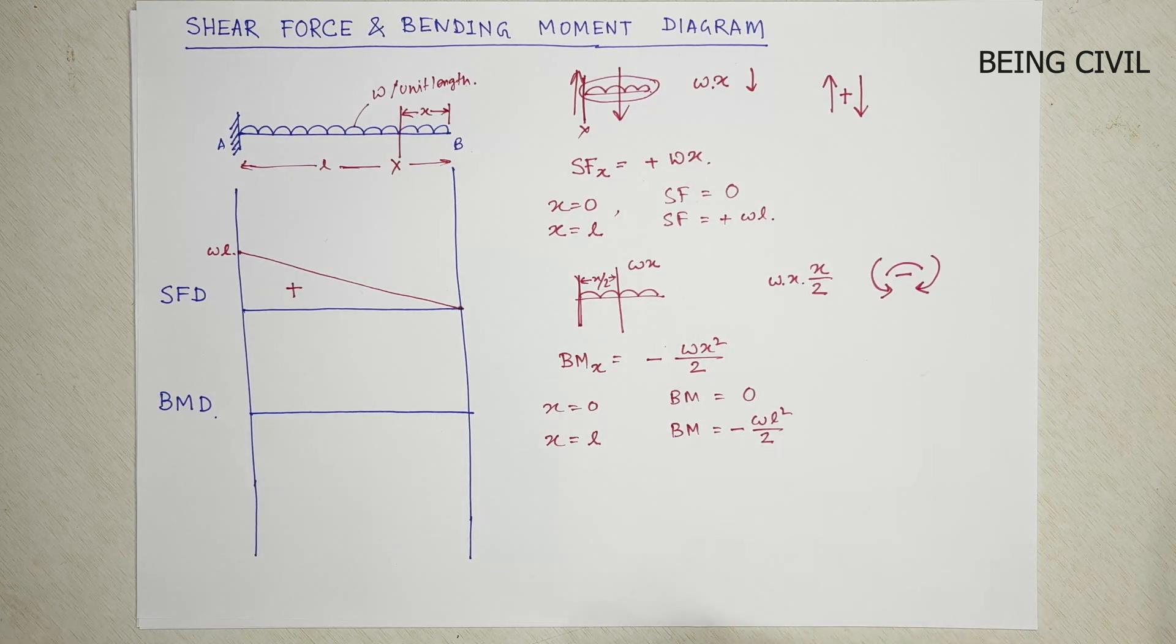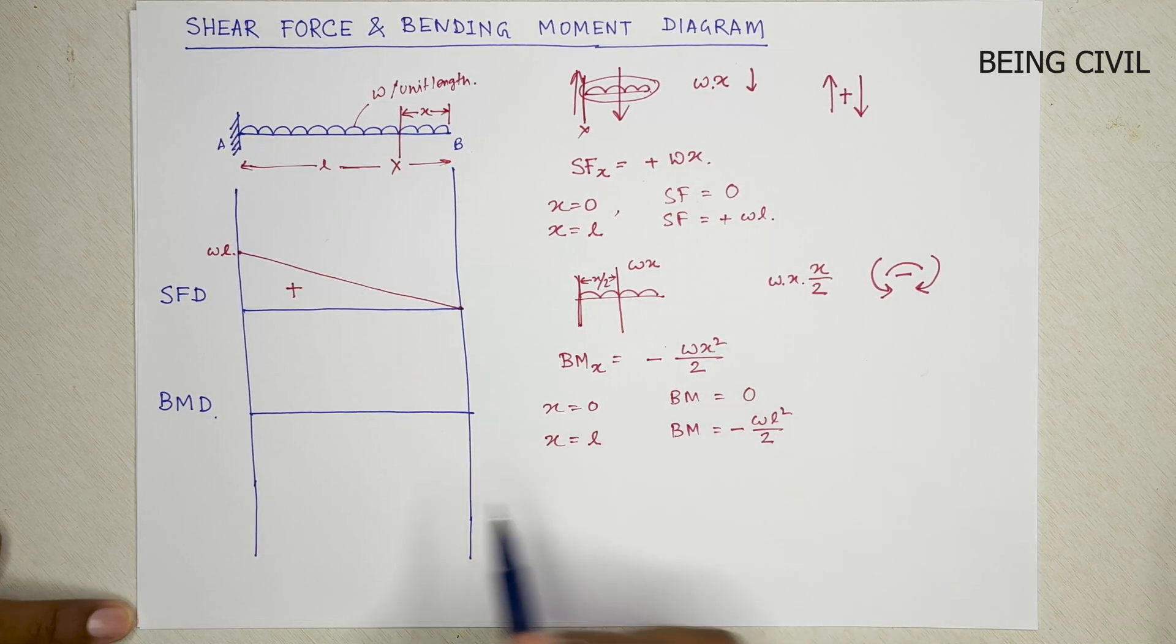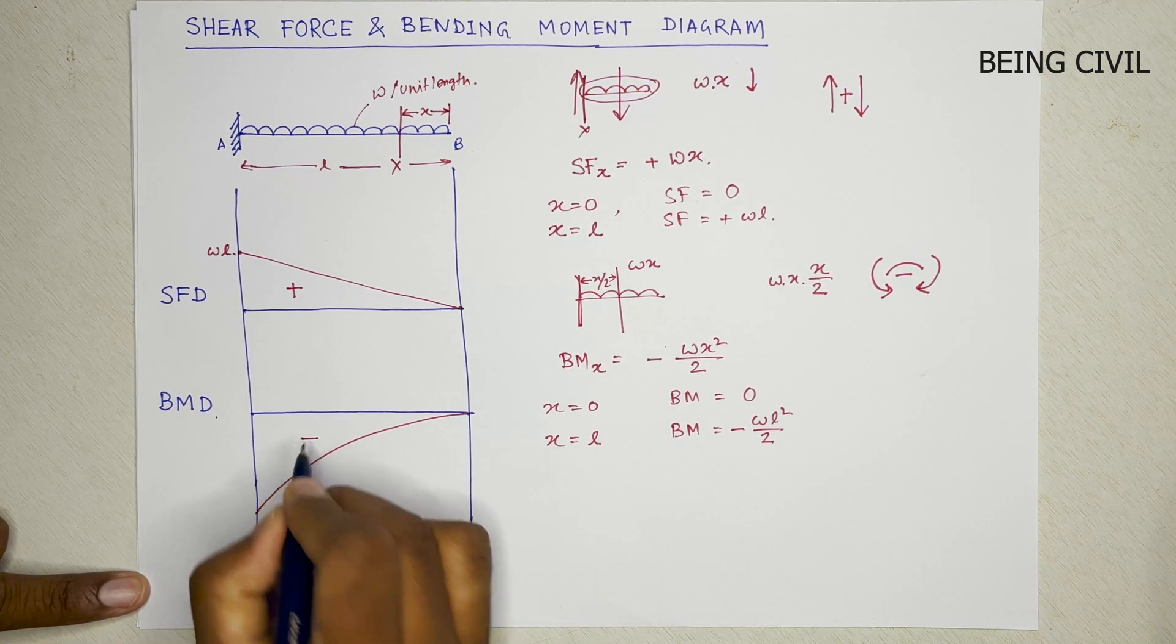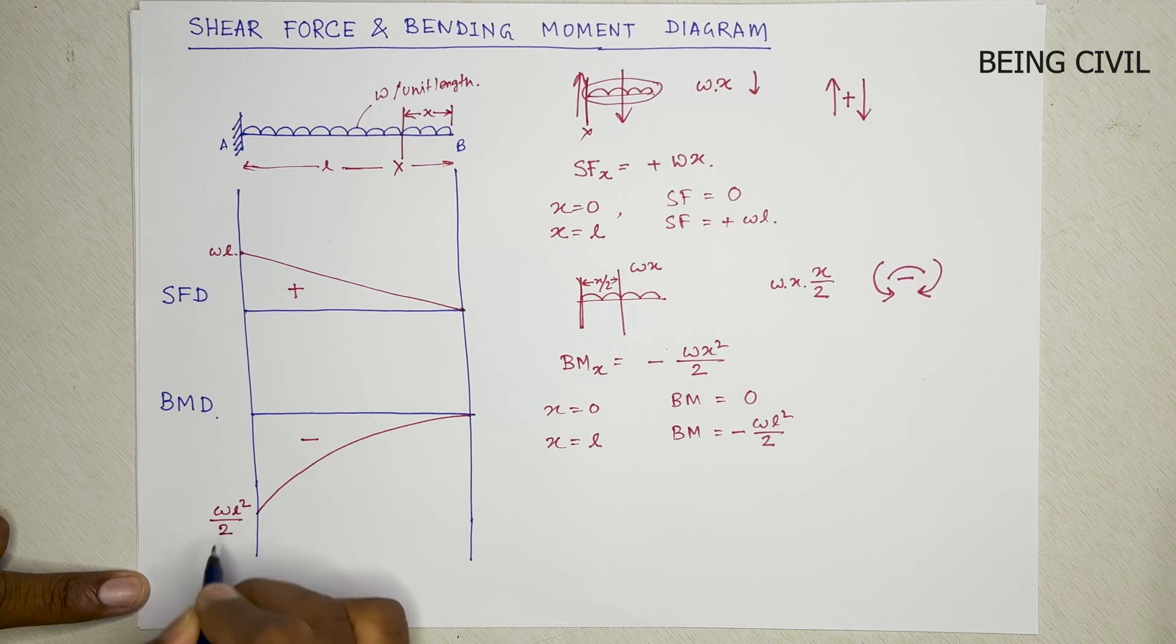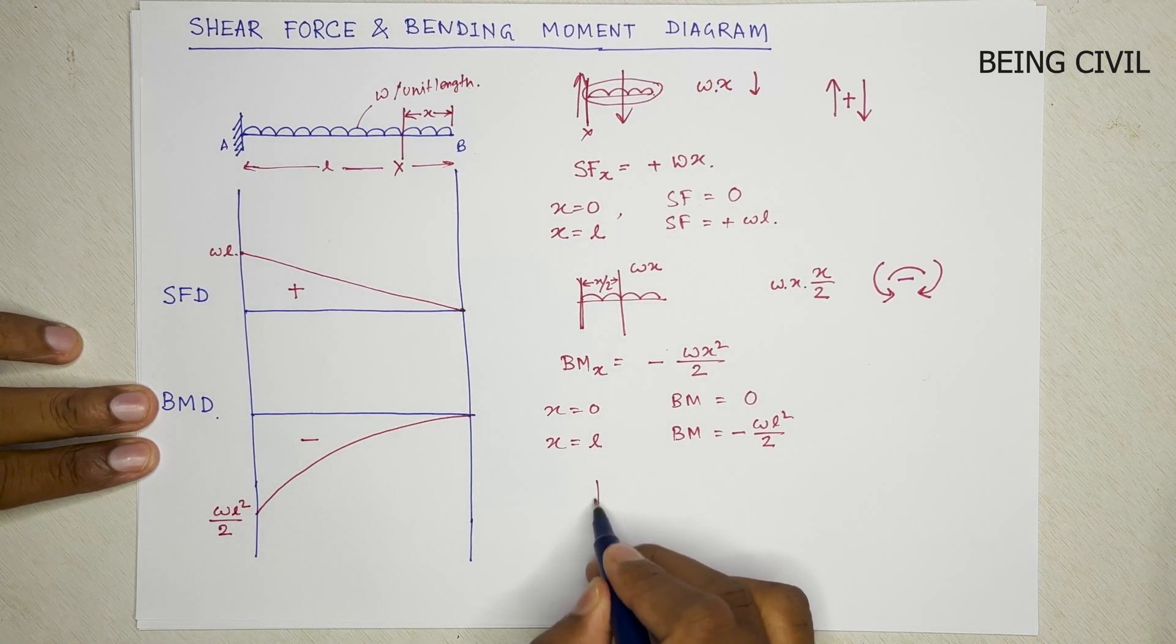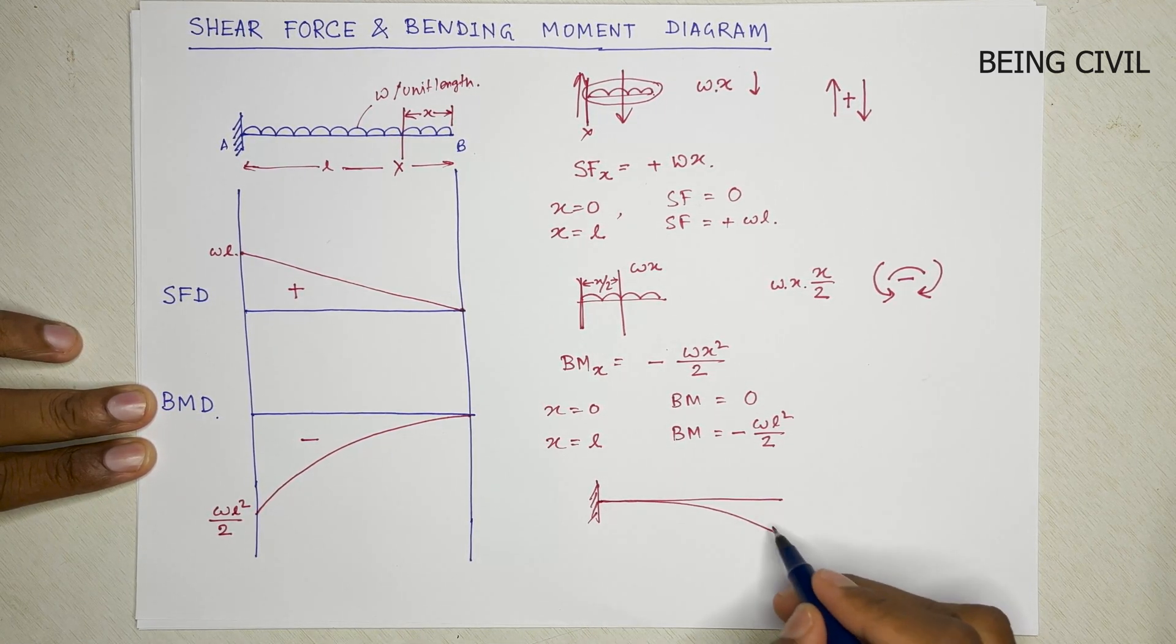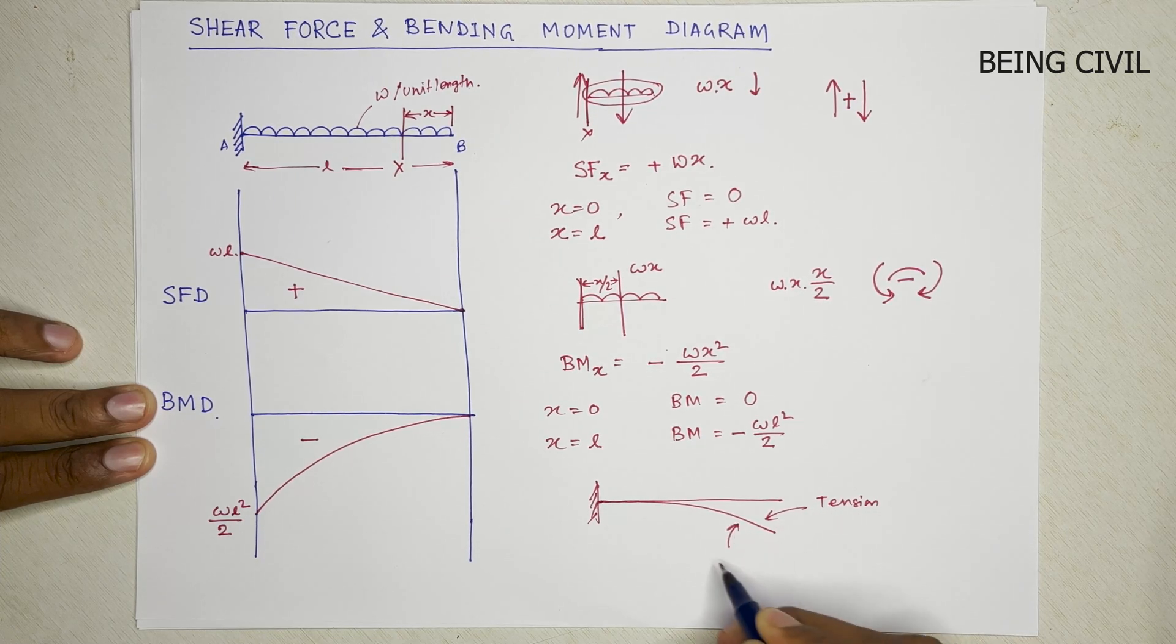And this curve will not be linear as it varies with x squared. So the bending moment diagram will be like this. It will be negative. Here the coordinate is wL squared by 2. The deflected shape of this beam will be like this: top side tension and the bottom is compression.